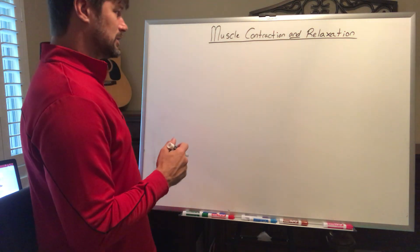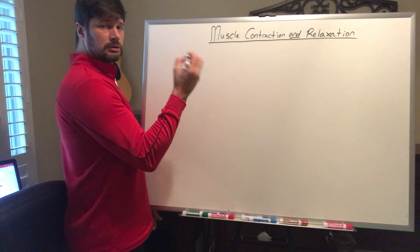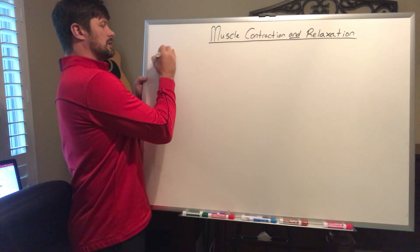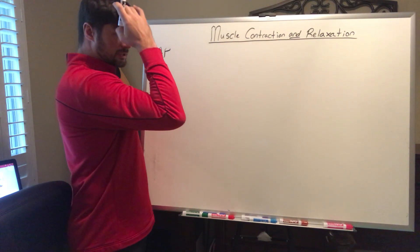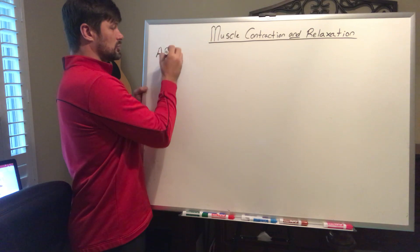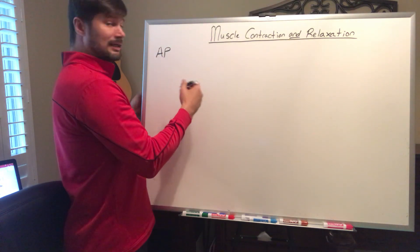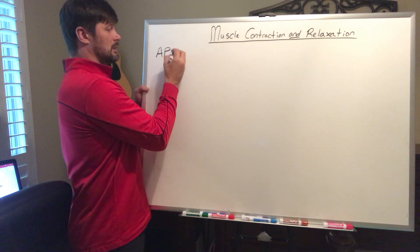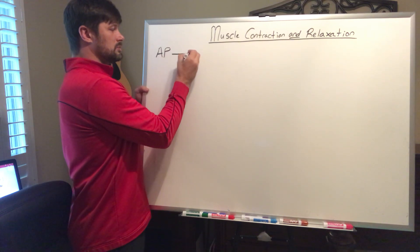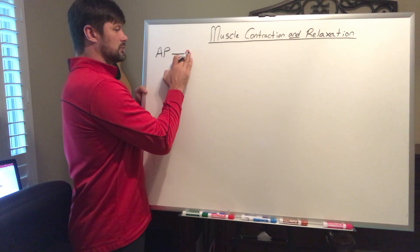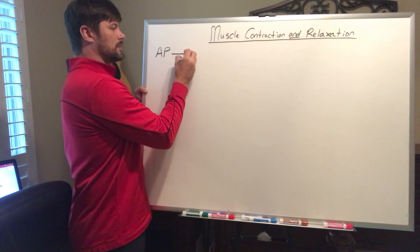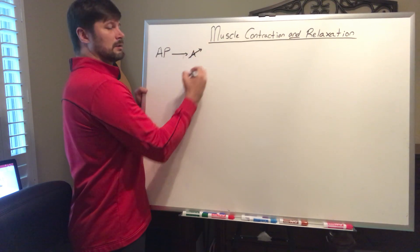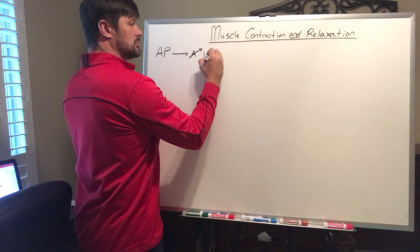Where does muscle contraction start? It starts with an action potential, and that action potential is being sent from the nervous system. That action potential is traveling down an axon, it reaches the bouton, and on the bouton it activates a voltage-gated calcium channel.